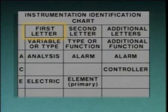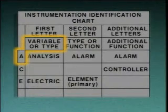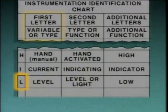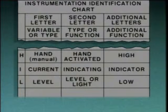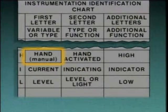In most cases, the first letter in the symbol designates the process variable associated with the symbol. For example, A as the first letter indicates that the instrument performs an analysis, such as a pH or density measurement. An L as the first letter means that the instrument measures level. If the first letter doesn't indicate a process variable, its meaning is usually explained on the chart. For example, H as the first letter stands for hand and means that the instrument is operated manually.